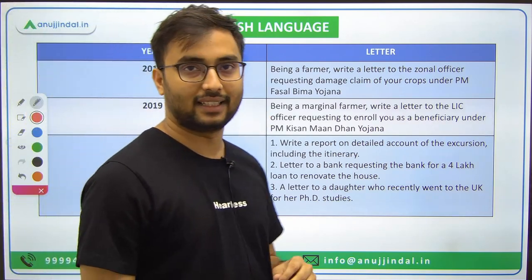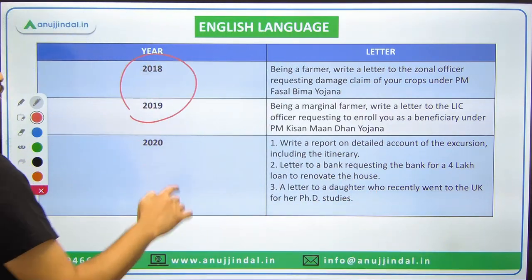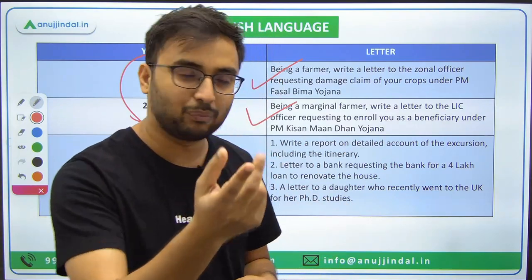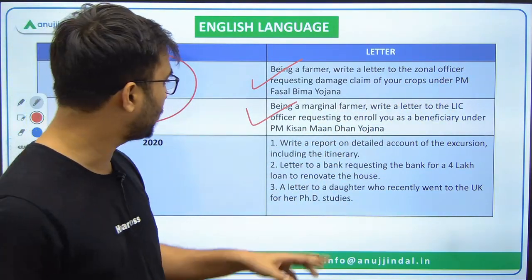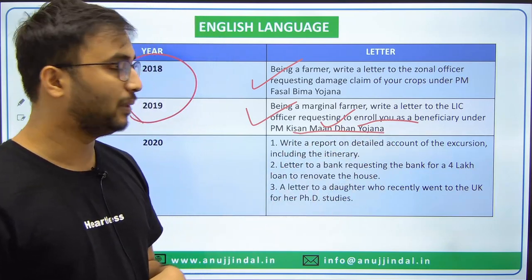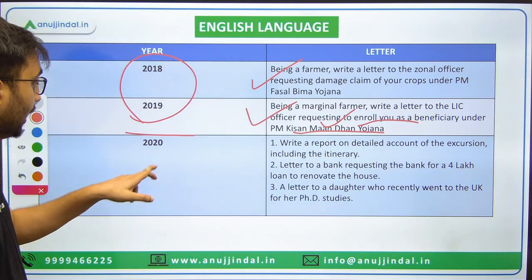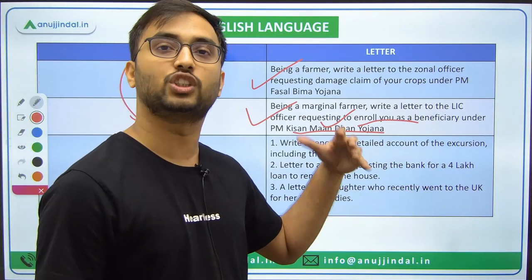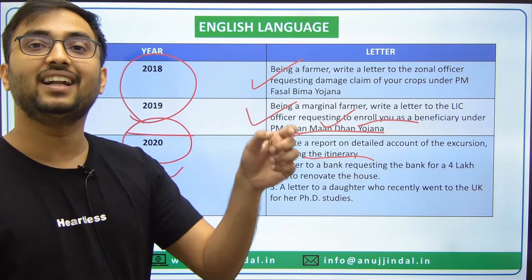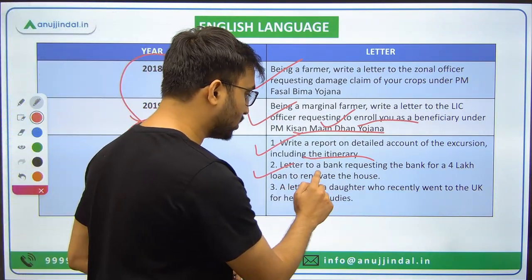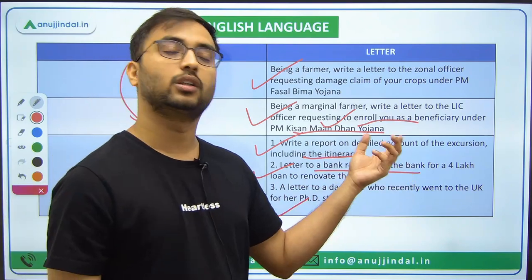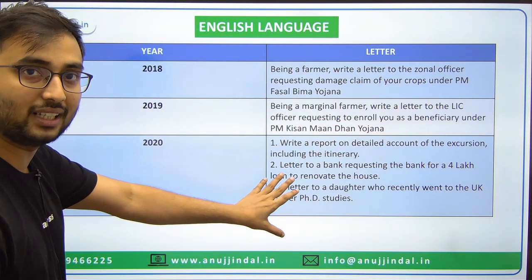Now let's discuss letter writing trends. In 2018 and 2019, if you are a farmer you had to write a letter to the zonal officer requesting help for damage of crops, or write a letter requesting enrollment in a scheme — very simple and direct. In 2020, the letters changed significantly: one was a detailed account of an excursion including an itinerary (a detailed formal letter), another was a formal letter to request a loan, and the third was an informal letter to a daughter doing her PhD in the UK.